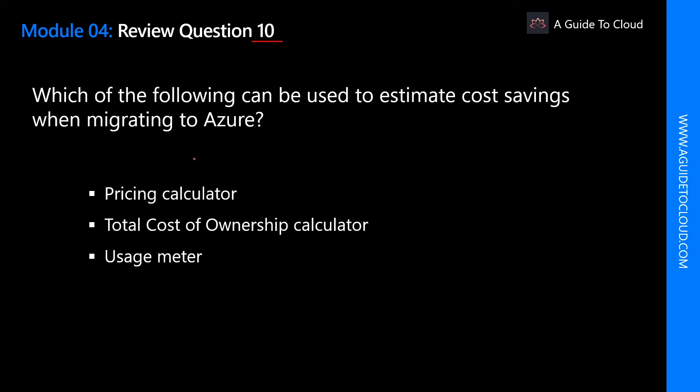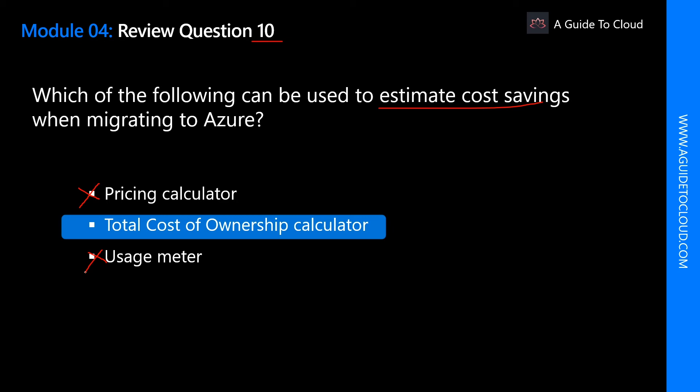Which of the following can be used to estimate cost savings when migrating to Azure? The Pricing Calculator gives you estimates on services you plan to use in Azure — not correct for migration savings. Usage Meter gives pricing value indications for each service — also not correct. The correct answer is the TCO (Total Cost of Ownership) Calculator, which is a tool you can use to estimate cost savings you can realize by migrating to Azure.